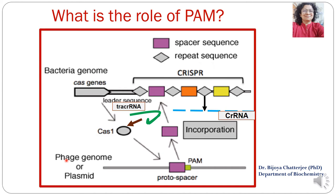On subsequent attack, if the same virus attacks again, the crRNA which has complementary base pairs will recognize the protospacer, and the Cas9 endonuclease on activation will cleave the viral genome and make it inactive.